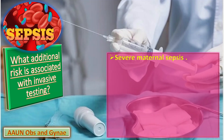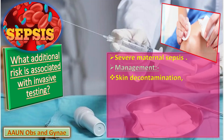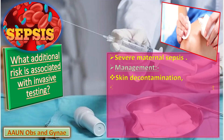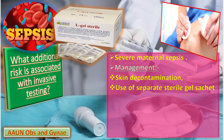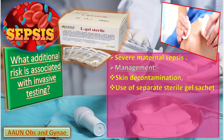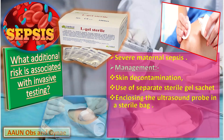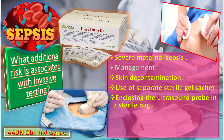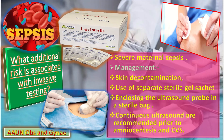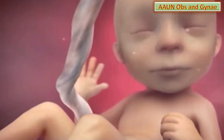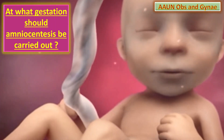To reduce infection risk, we need to perform: first, skin decontamination; second, use of separate sterile gel; third, enclosing the ultrasound probe in a sterile bag. Continuous ultrasound is recommended prior to amniocentesis and chorionic villus sampling.